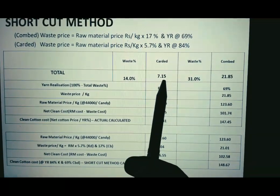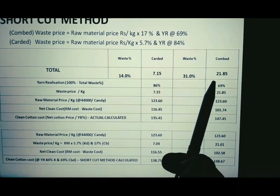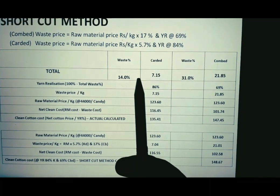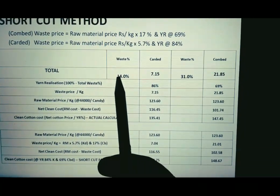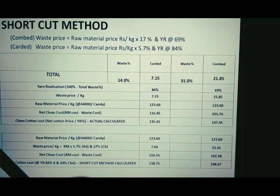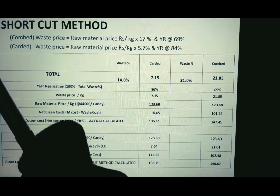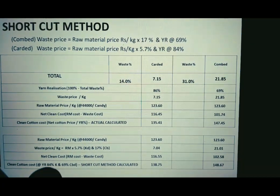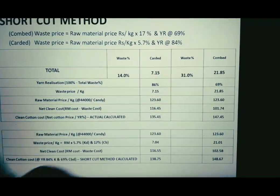In the actual calculation, the carded yarn waste price was 7.15 rupees and the combed yarn waste price was 21.85 rupees, derived using exact waste percentage and exact sale price. If we do not have that exact data, we can still calculate clean cotton cost using the tentative formulas. The resulting figure may vary slightly but will be close to the exact price.